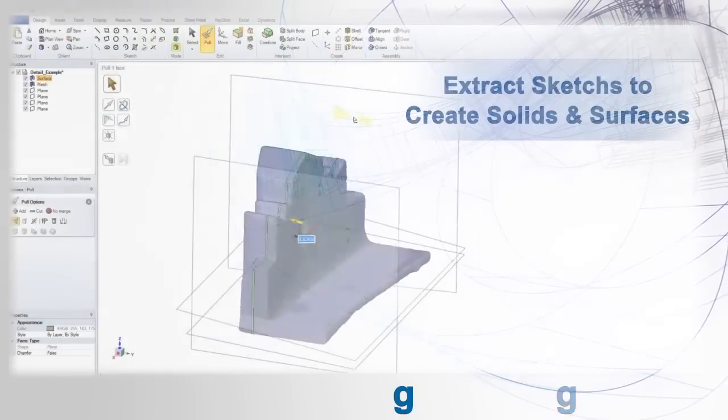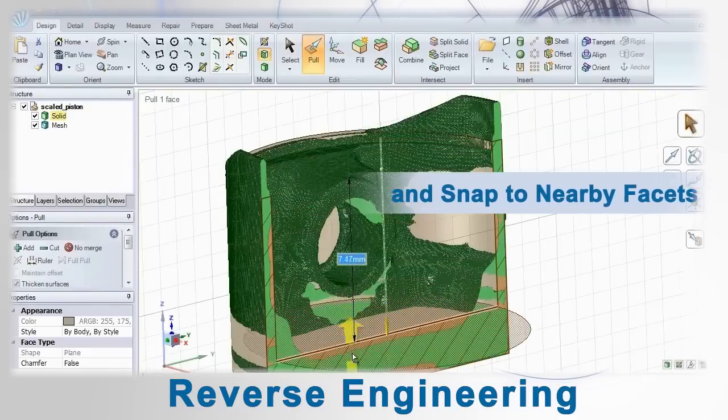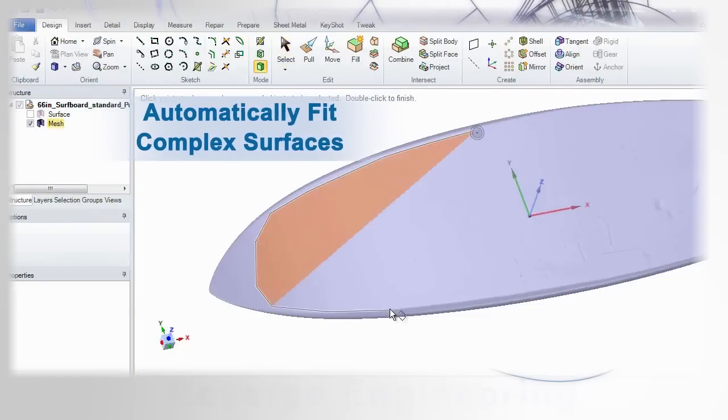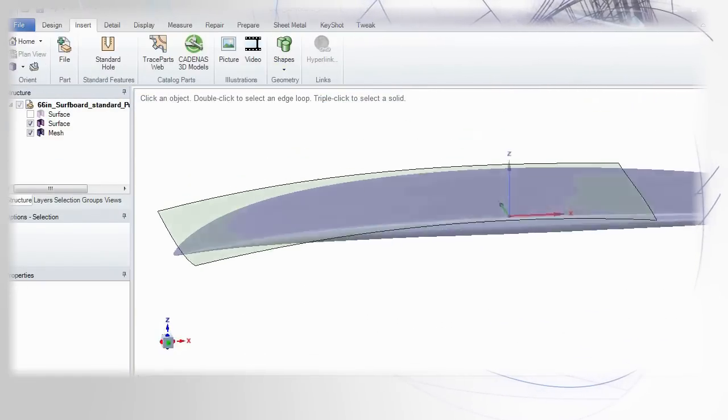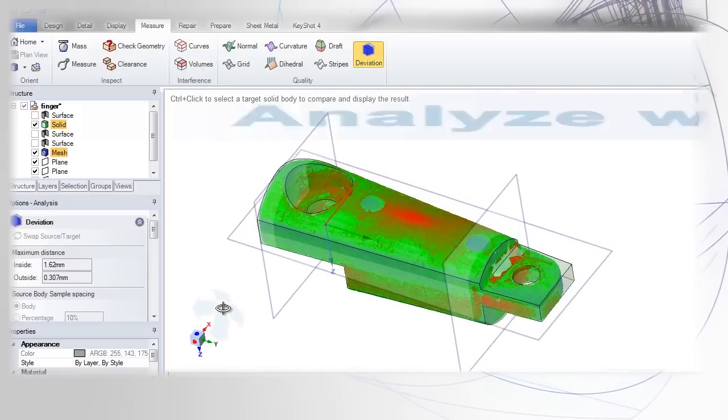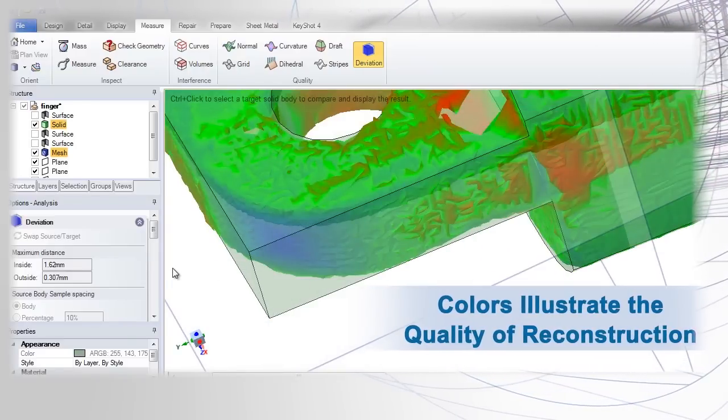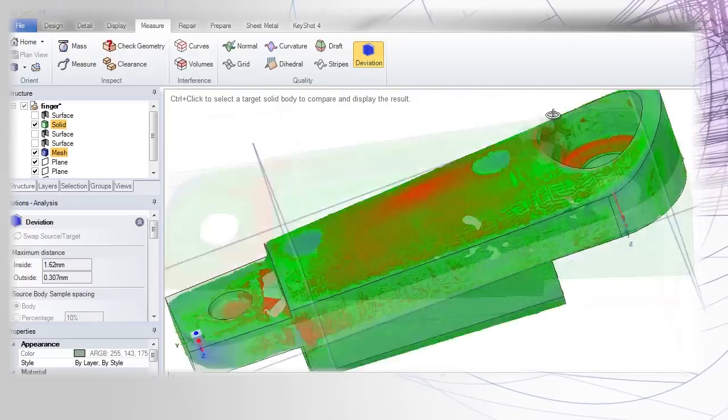For reverse engineering, SpaceClaim lets you quickly extract sketches to reconstruct a solid from an STL. Use facets of the STL to accurately recreate the model, either by snapping or fitting surfaces to various triangles. When done, a handy deviation tool lets you know just how precise the reconstruction was.